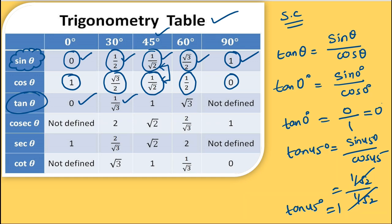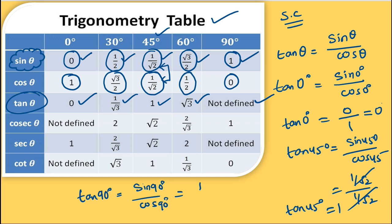Tan 90° is not defined. Why? Because tan 90° = sin 90° / cos 90° = 1/0, and anything divided by 0 is not defined.